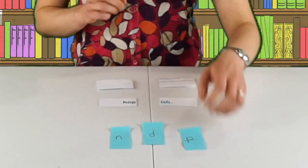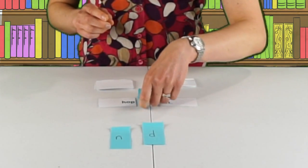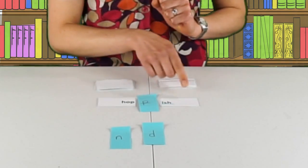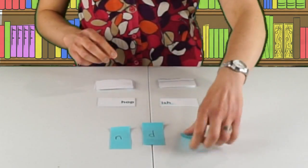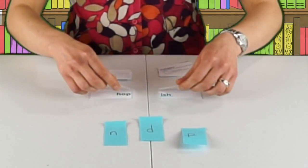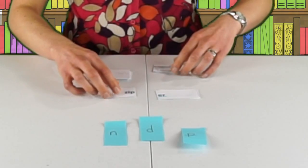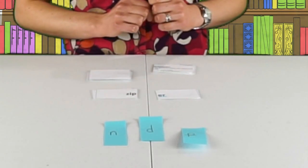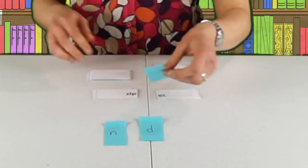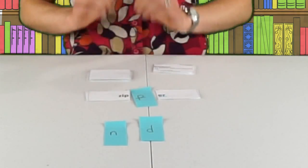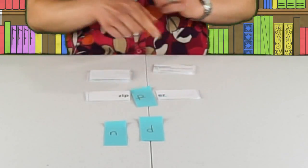'Hop' plus 'ish' — another one that follows our rule, so I'd put that consonant in there: 'hoppish.' Next, 'zip' plus 'er' — we have another one that follows our rule, so let's put that double consonant in there: 'zipper.'